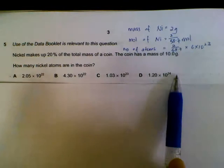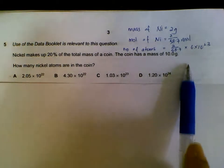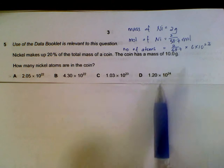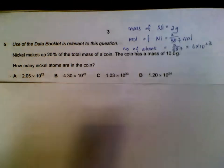Once you have the number of moles, to find the number of atoms, we multiply by 6 times 10 to the power of 23. That will give us A.